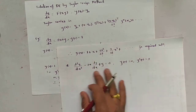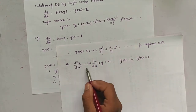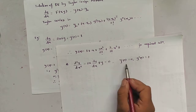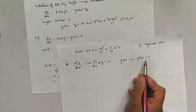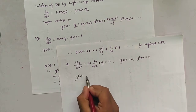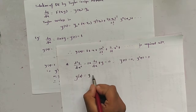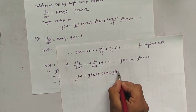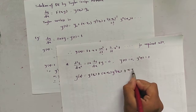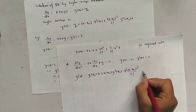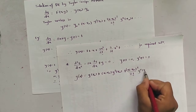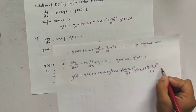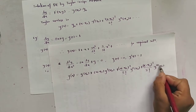Let us now solve a similar example: d²y/dx² − 2x·(dy/dx) + y = 0, where y(0) = 0 and y'(0) = 2. Let us write the Taylor series: y(x) = y₀ + (x − x₀)y'(x₀) + (x − x₀)²/2! · y''(x₀) + (x − x₀)³/3! · y'''(x₀) + ···